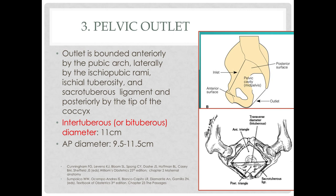The third plane is the pelvic outlet, bounded anteriorly by the pubic arch, laterally by the ischiopubic rami, ischial tuberosity, and sacrotuberous ligament, and posteriorly by the tip of the coccyx. In the pelvic outlet, we now involve the intertuberous diameter — the distance between the two ischial tuberosities — which is approximately 11 centimeters.